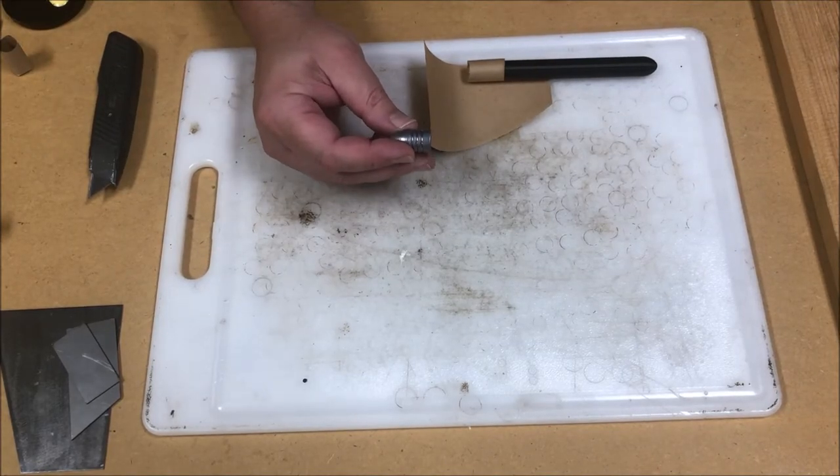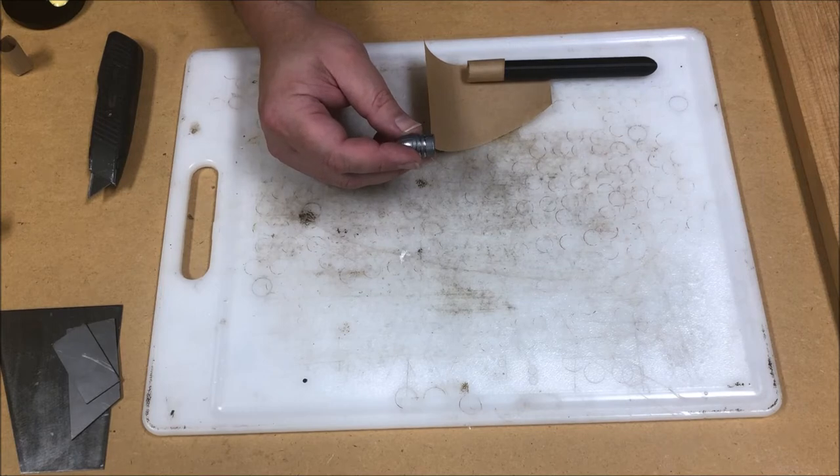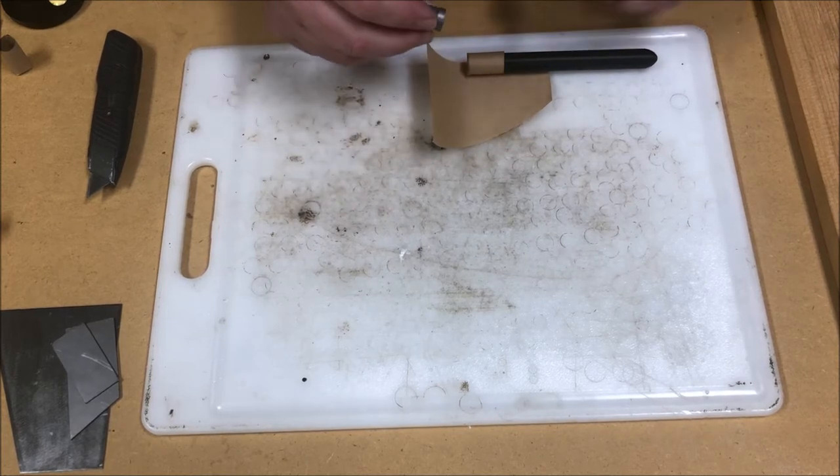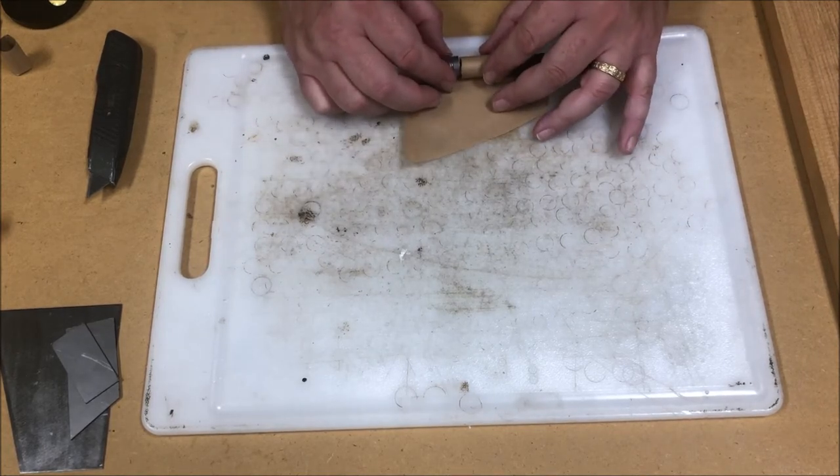So in period, the bullet would have been sized and lubricated with a lubricant that was one part tallow to three parts beeswax. But of course, this is not sized nor lubricated, it's just for demonstration.